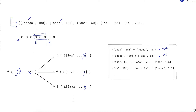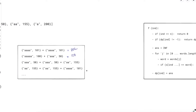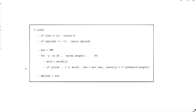If at any point you can't find a matching first string — for example if the first character is 'x' and no word starts with 'x' — there is no valid path and you return a very large value to denote impossibility. The pseudo-code takes an index 'ind' representing the minimum cost to make the string starting at ind. If we've exhausted the entire string, return 0 — making nothing costs nothing.